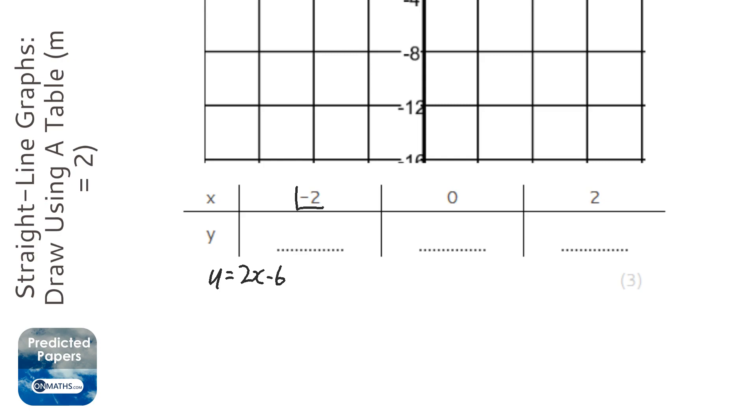We're going to find out what y is when x is -2. So y = 2 times -2, take away 6. Positive times a negative is a negative. 2 times 2 is 4. So we've got -4 - 6. On the number line, you go to -4, you go left 6, and you get -10.